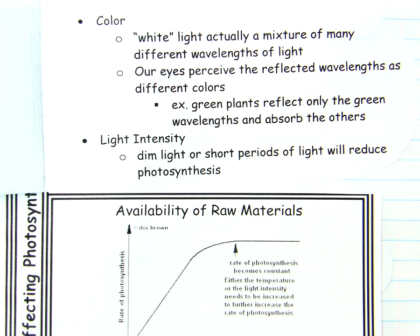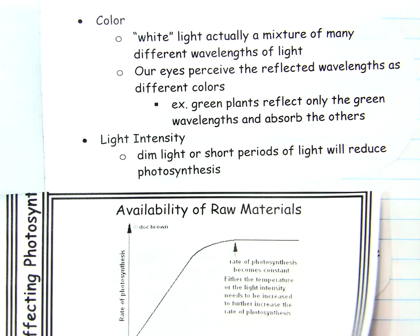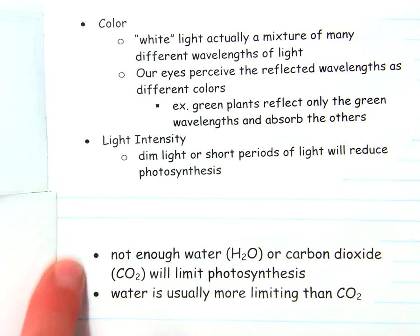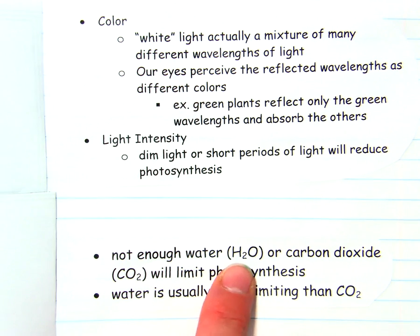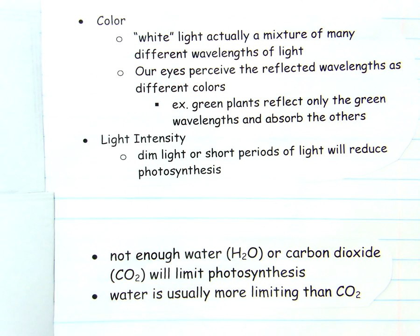Our next factor is the availability of raw materials — the things that are needed, which are the reactants in our equation. The two reactants we had were water and carbon dioxide. If the plant doesn't have enough of either one of these, it's going to limit or reduce the amount of photosynthesis.